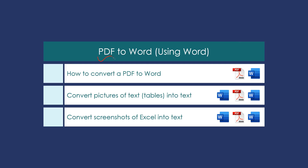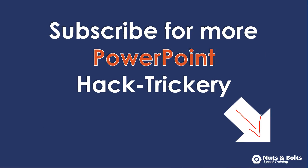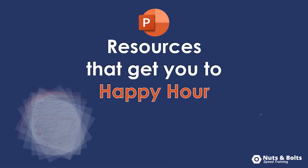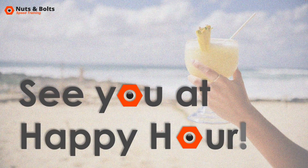As a quick recap: I showed you how to convert a straight PDF to Word by simply reopening the PDF in Microsoft Word. I showed you how to convert pictures of text or tables into text going from Word to PDF and PDF back to Word. And I showed you techniques for converting sloppy screenshots of Excel into text — both an easier and a harder version — going Word to PDF, PDF back to Word, and potentially using Excel to reformat the table. If you're new to the channel, subscribe on YouTube, and check the links below for PDF cheat sheets and free courses. This is Taylor from Nuts and Bolts Speed Training.